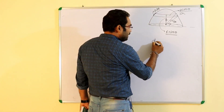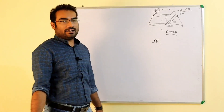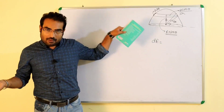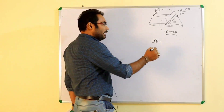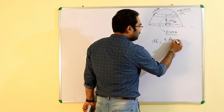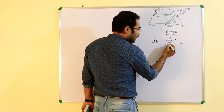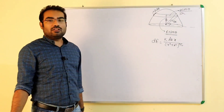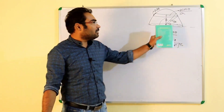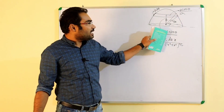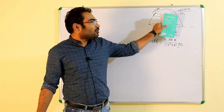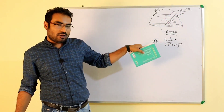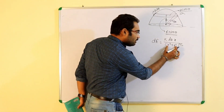Yahan se aap dekh sakte hain dE ka jo value aayega — electric field ka jo value aayega — ring ke case me jo humne electric field likhte hain, vohi yahan pe likhna hoga. To ring ke case me: K dq x by (r² + x²) to the power 3/2. Jo bhi term hai, uske jagah pe put kar dete hain. Small r ke jagah pe R cos θ put karenge, x ke jagah pe R sin θ put karenge.